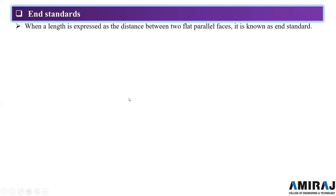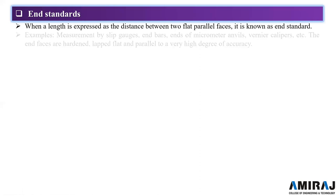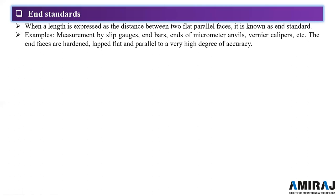The second category is the end standard. When a length is expressed as the distance between two flat parallel faces, it is known as an end standard. Examples include measurement by slip gauges, end bars, micrometers, and vernier calipers. The end faces are hardened, left flat, and parallel to a very high degree of accuracy.